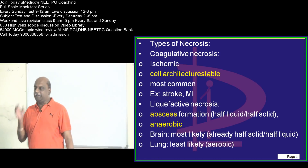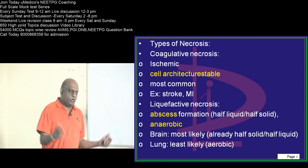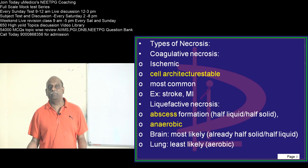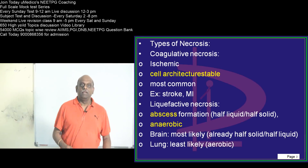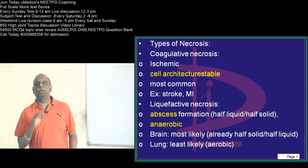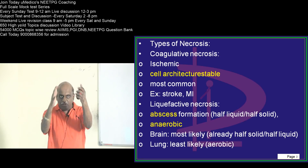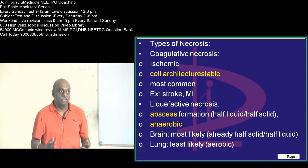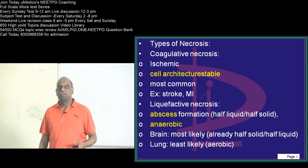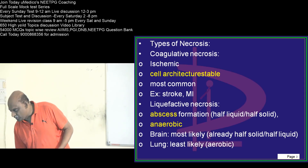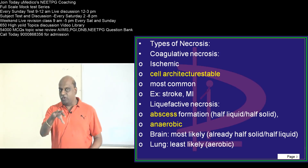Let us take up some bullets about the types of necrosis. What is the most common type — coagulative, fibrinoid, or liquefactive? Coagulative is the most common type of necrosis. Ischemic injury leads to coagulative necrosis, and its key feature is that the cellular architecture is still preserved, which is the hallmark. Whenever there is a cerebral vascular accident, stroke, or myocardial infarction, it is coagulative necrosis.